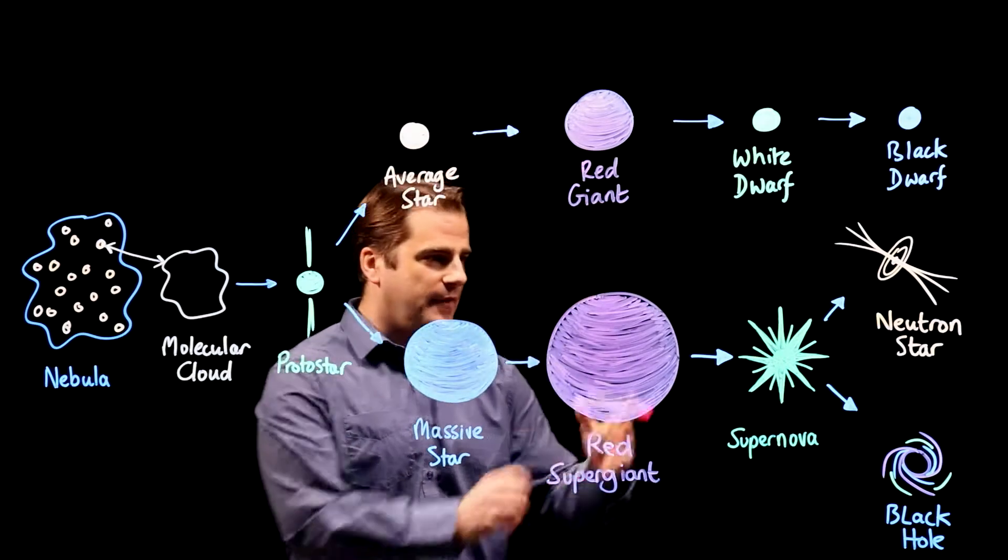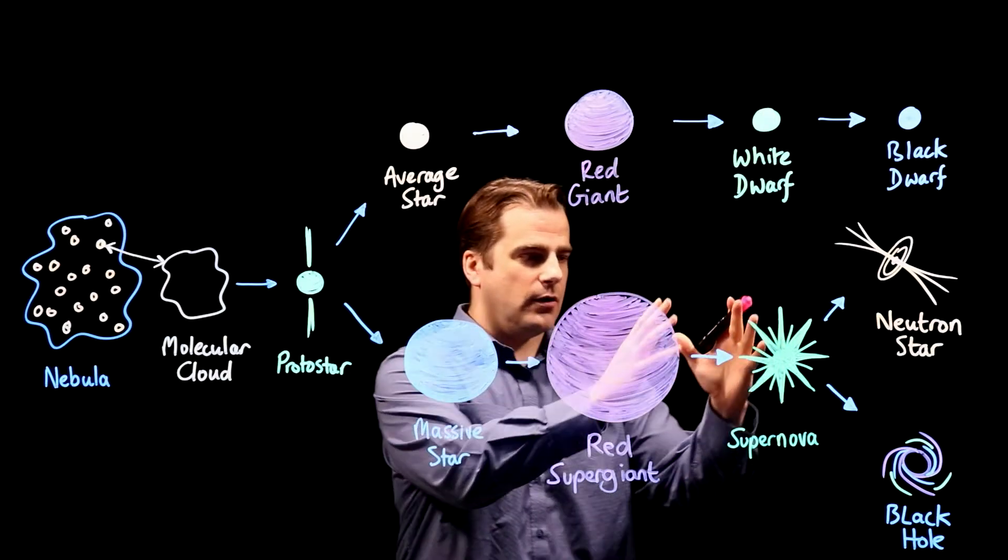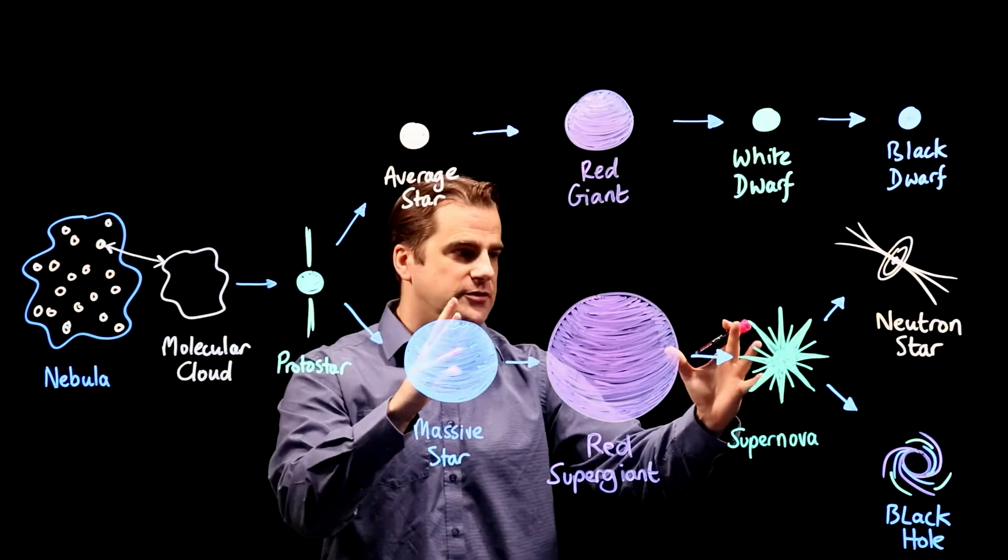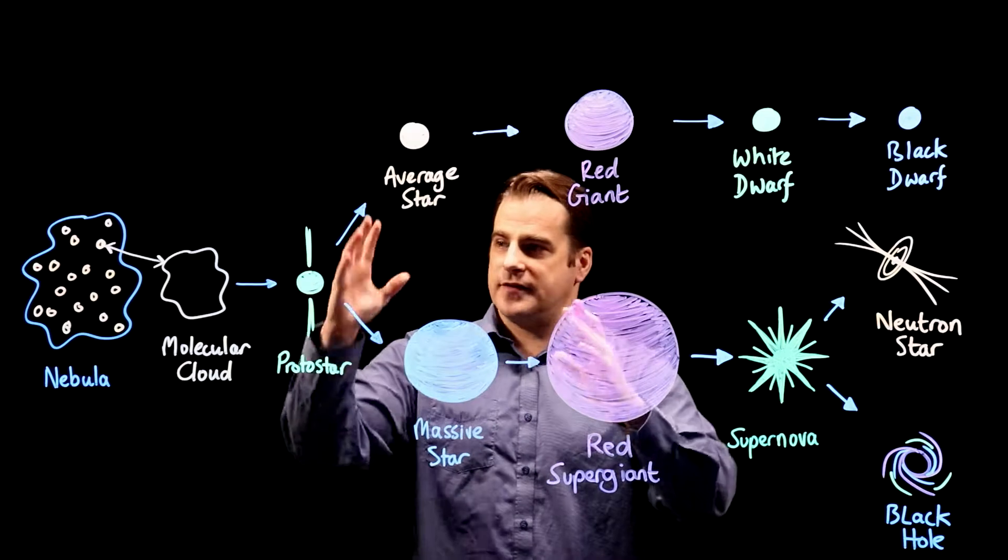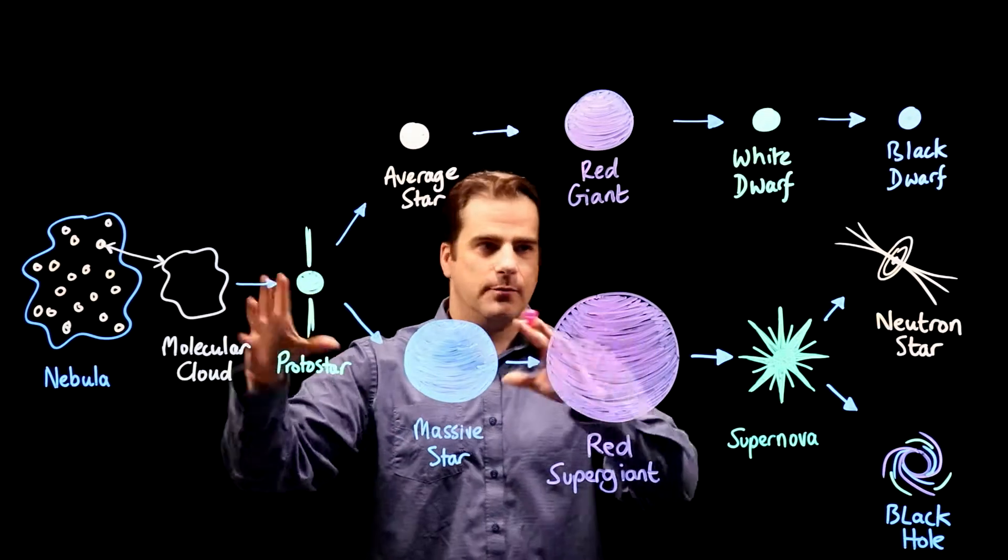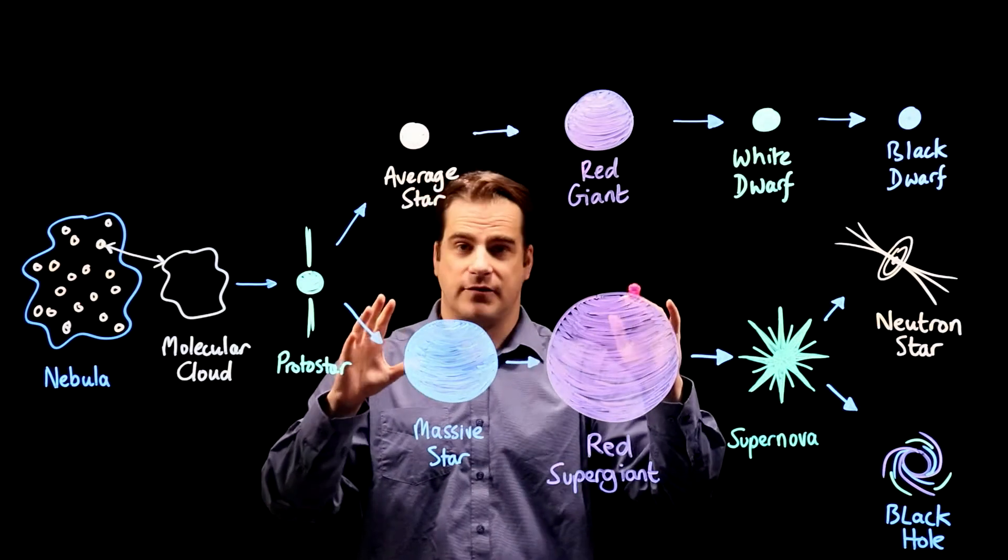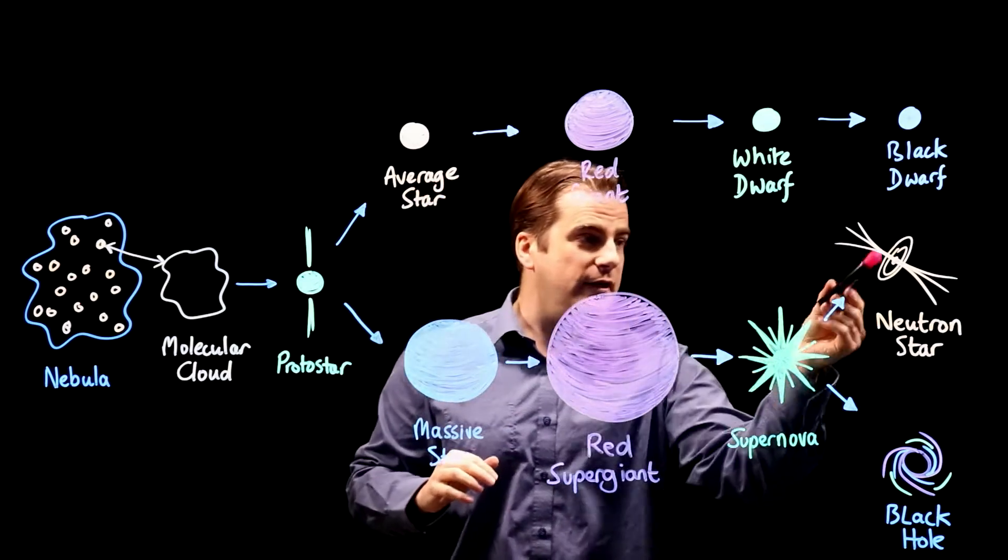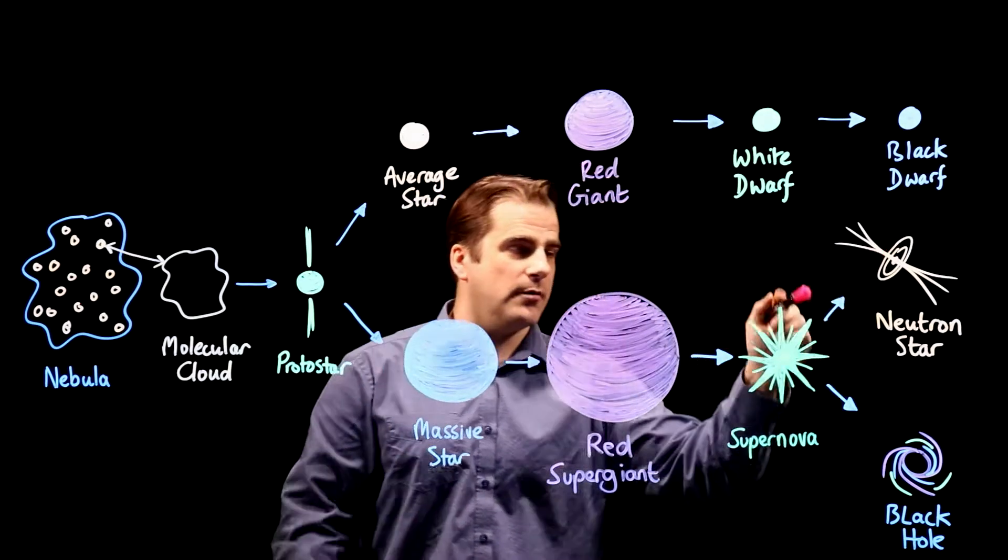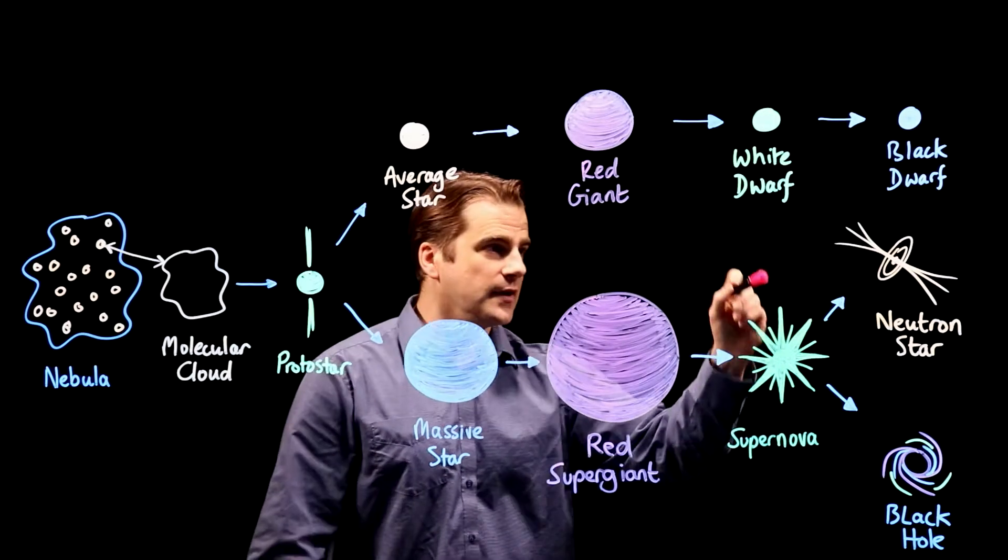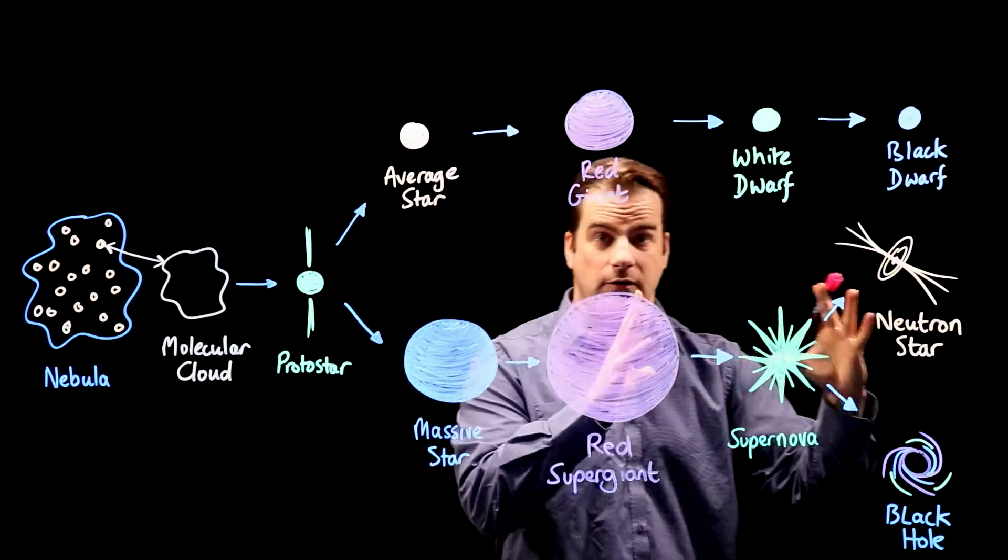Now what's left over after the supernova explosion? If the star is between about 8 and 20 times the mass of the sun, it'll go down this route here and form a neutron star. That's what's left after the supernova explosion.